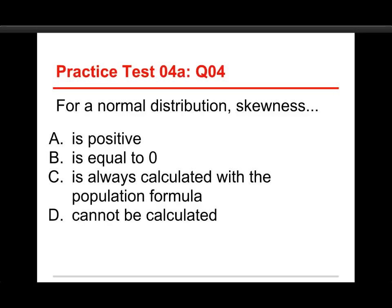All right, number four, for a normal distribution skewness: A is positive, B is equal to zero, C is always calculated with the population formula, or D cannot be calculated. Okay, the answer to this one is that for a normal distribution skewness is equal to zero.